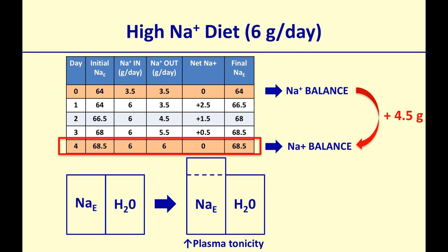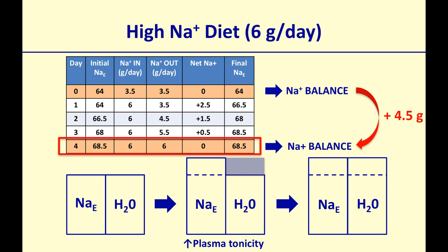The body doesn't like this. So it tries to match total body sodium with total body water again by retaining water. At the end of the adaptation process, total body sodium is high and total body water is also high, restoring normal plasma sodium concentration, osmolality, and tonicity — but at the expense of having gained isotonic fluid, which is salt and water. This isotonic volume expansion increases extracellular fluid volume. So when total body sodium goes up, extracellular fluid volume goes up as well.